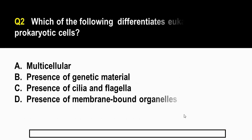The first question was under earth science. Question number two is under biology. So the question is, which of the following differentiates eukaryotic cells from prokaryotic cells? A. Multicellular. B. Presence of genetic material. C. Presence of cilia and flagella. D. Presence of membrane-bound organelles.